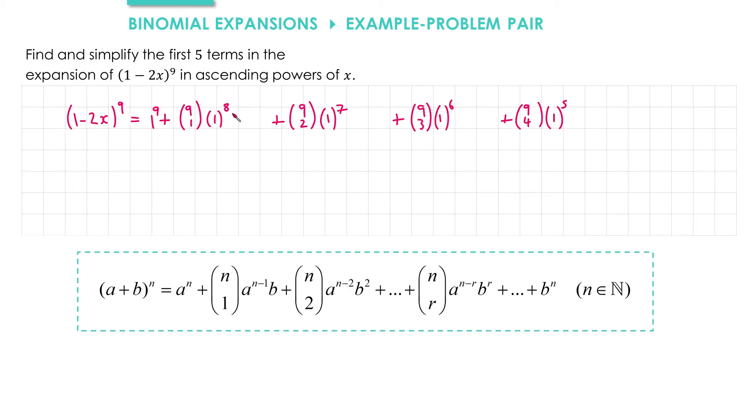We've also got our powers of negative 2x. So we've got negative 2x to the power of 1, negative 2x squared, negative 2x cubed, and negative 2x to the power of 4.